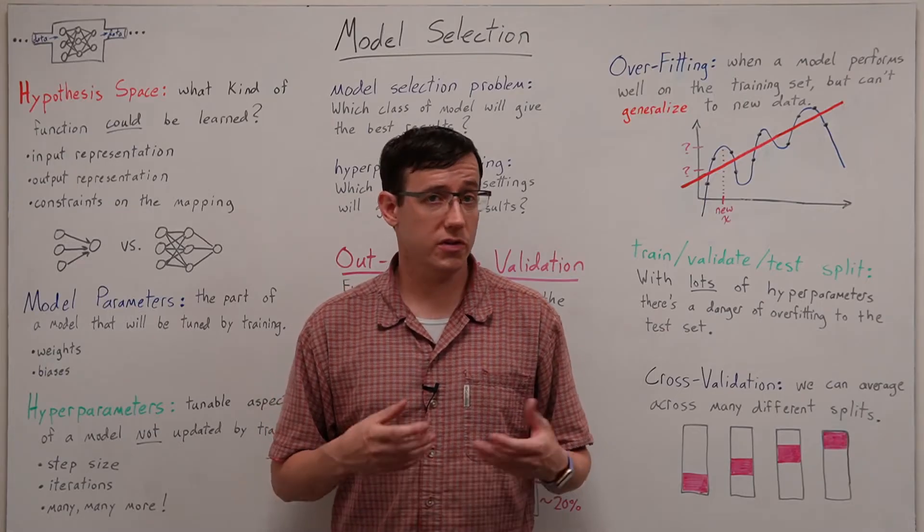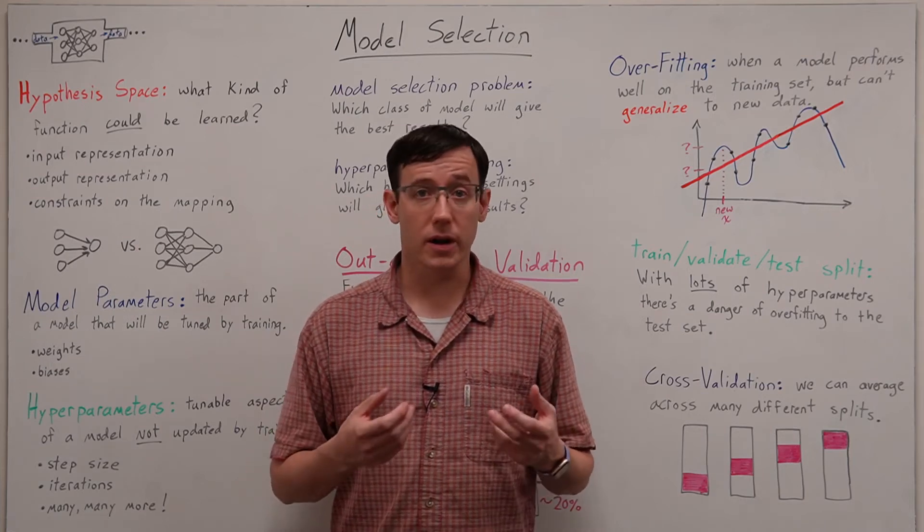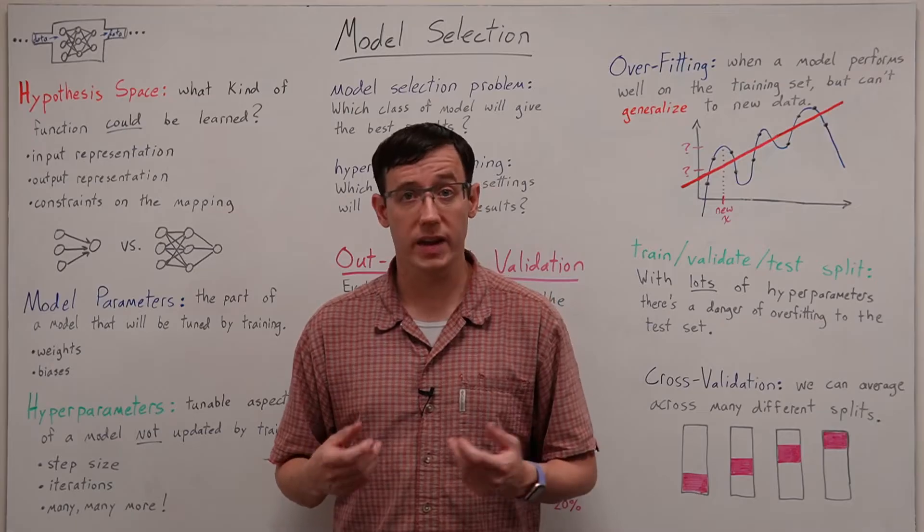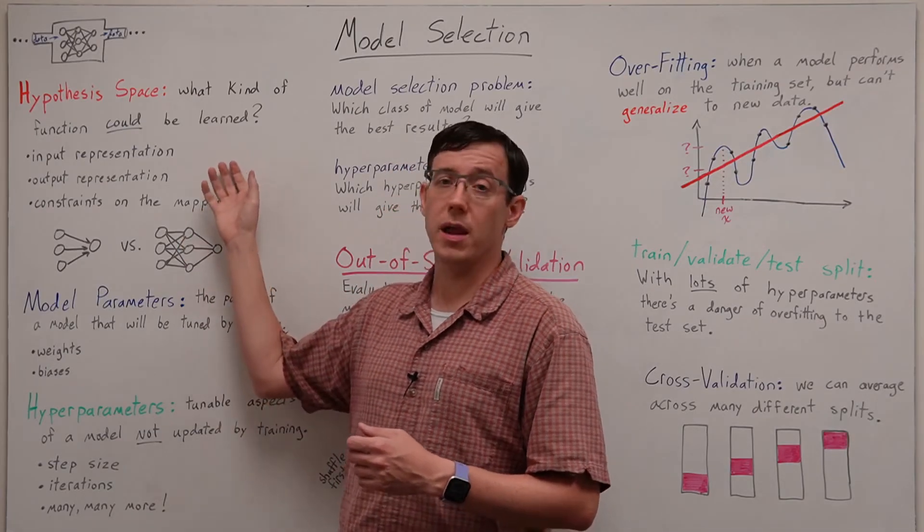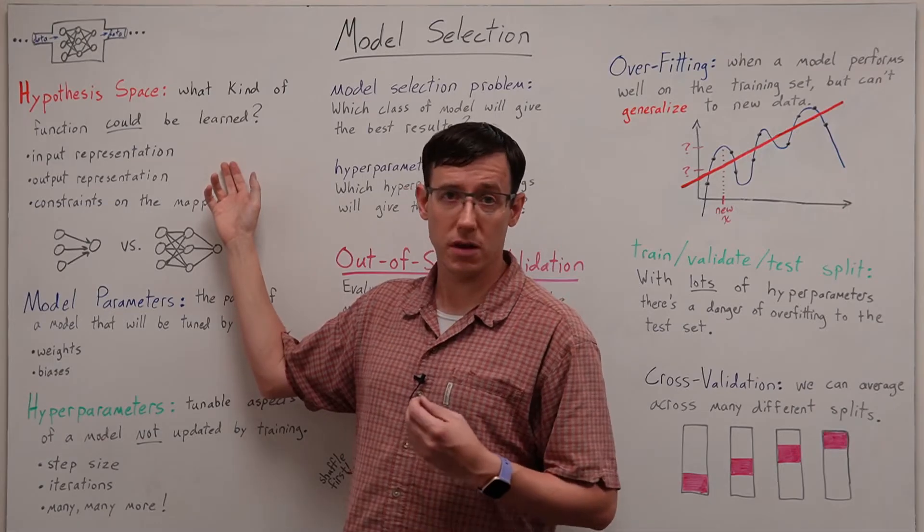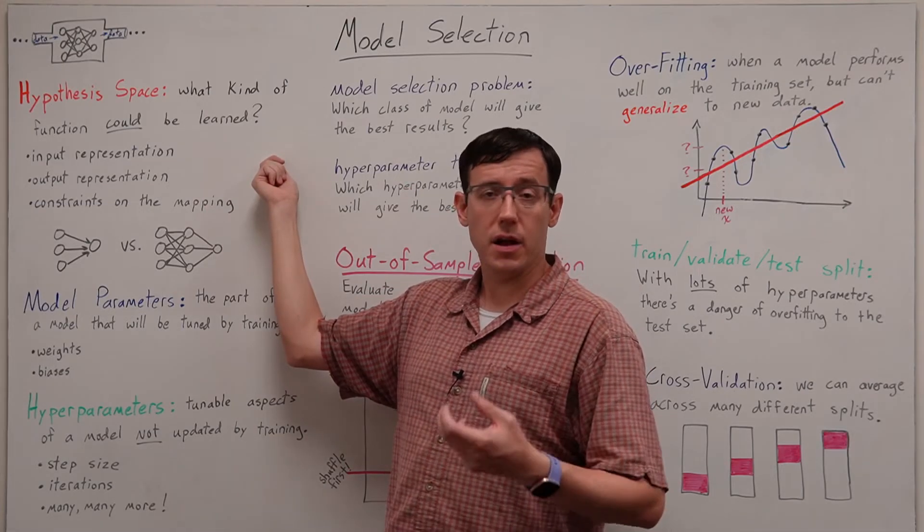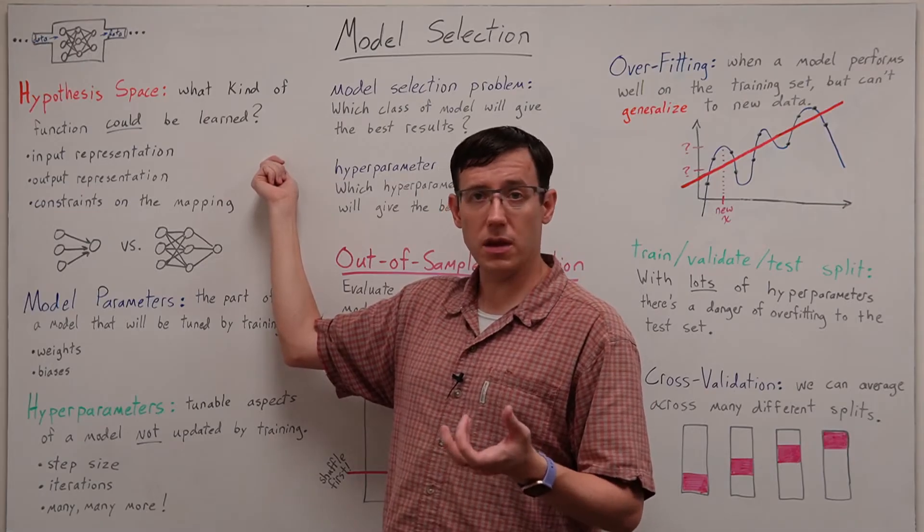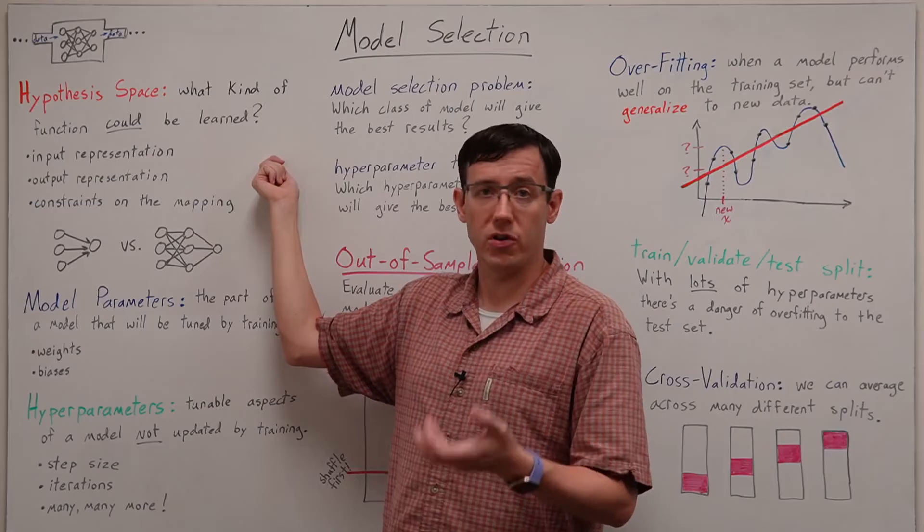The first step towards choosing a model is to determine what options are even available for solving a given problem, which leads us to the notion of a model's hypothesis space. For a given machine learning model, the hypothesis space is the types of functions it could represent.